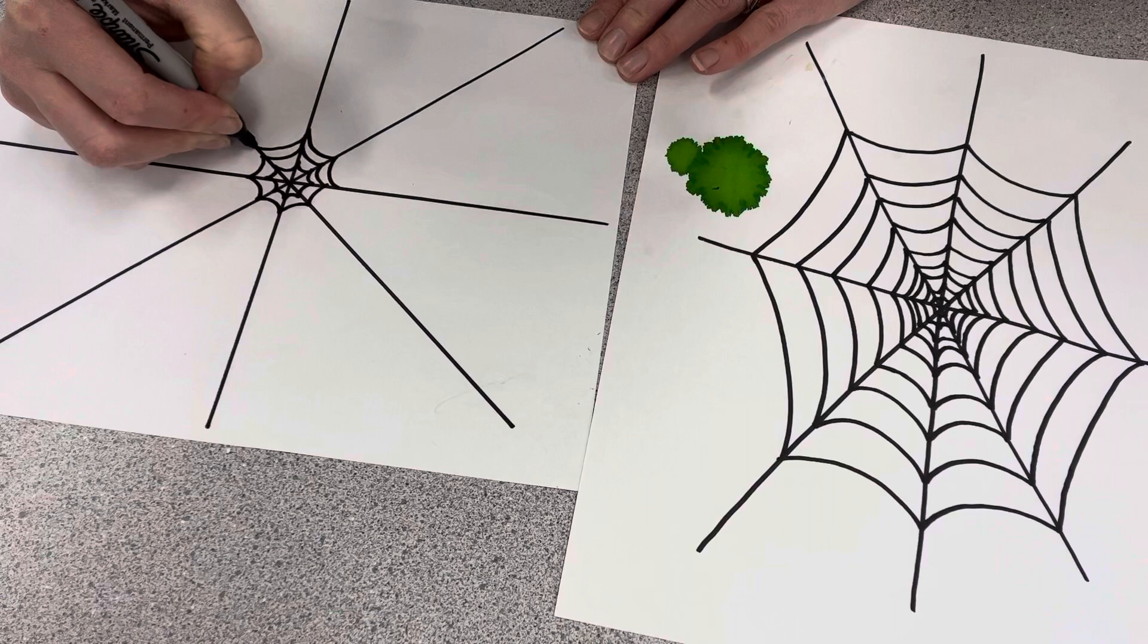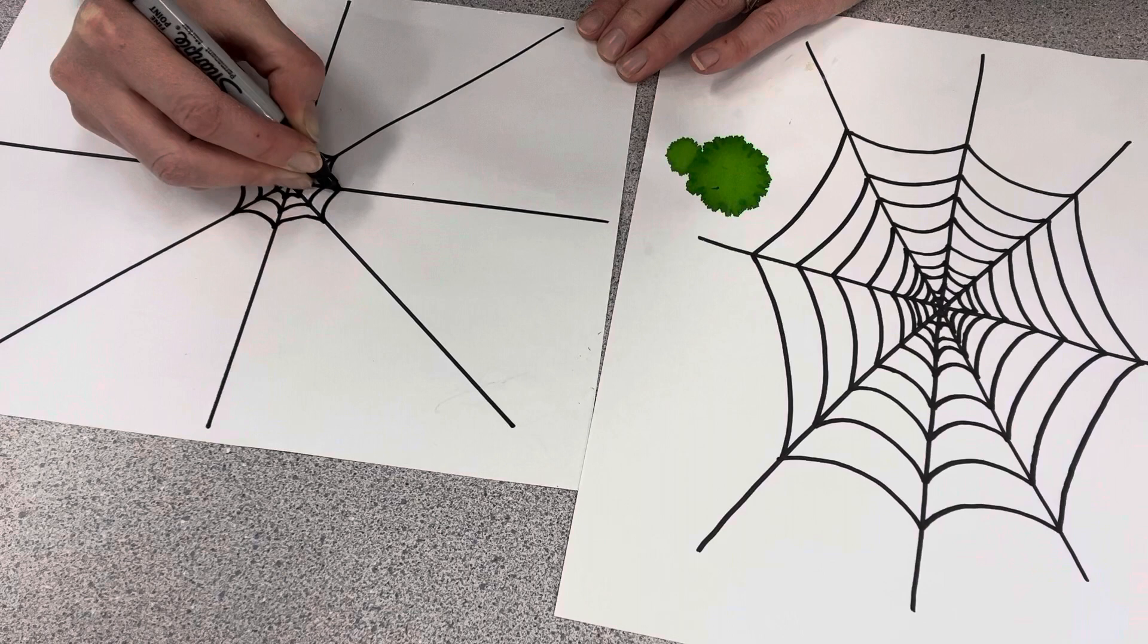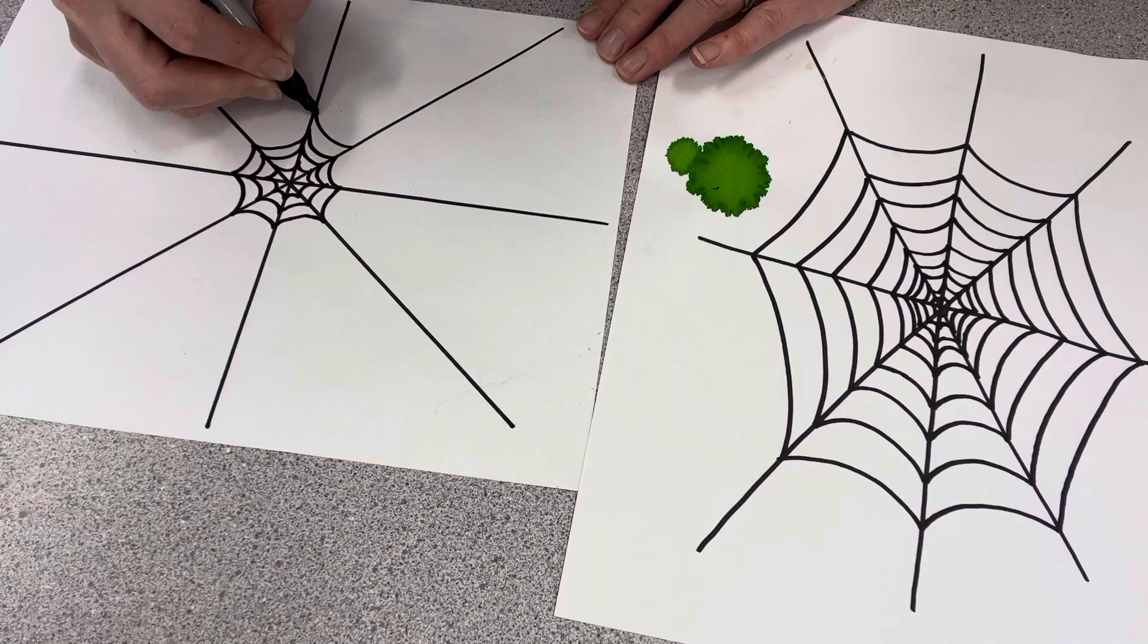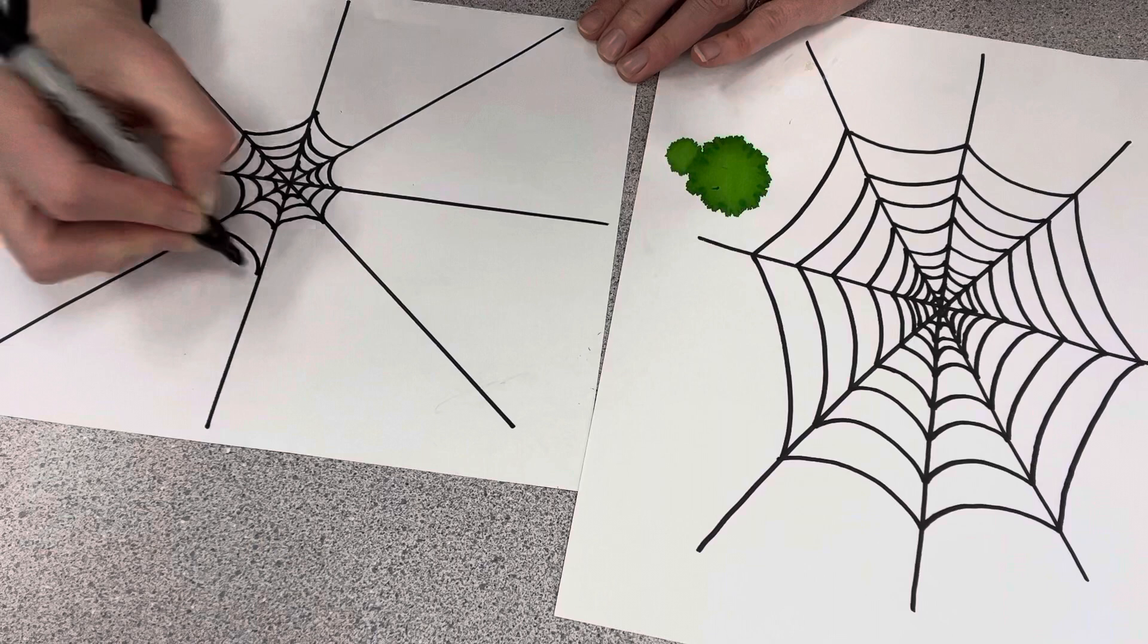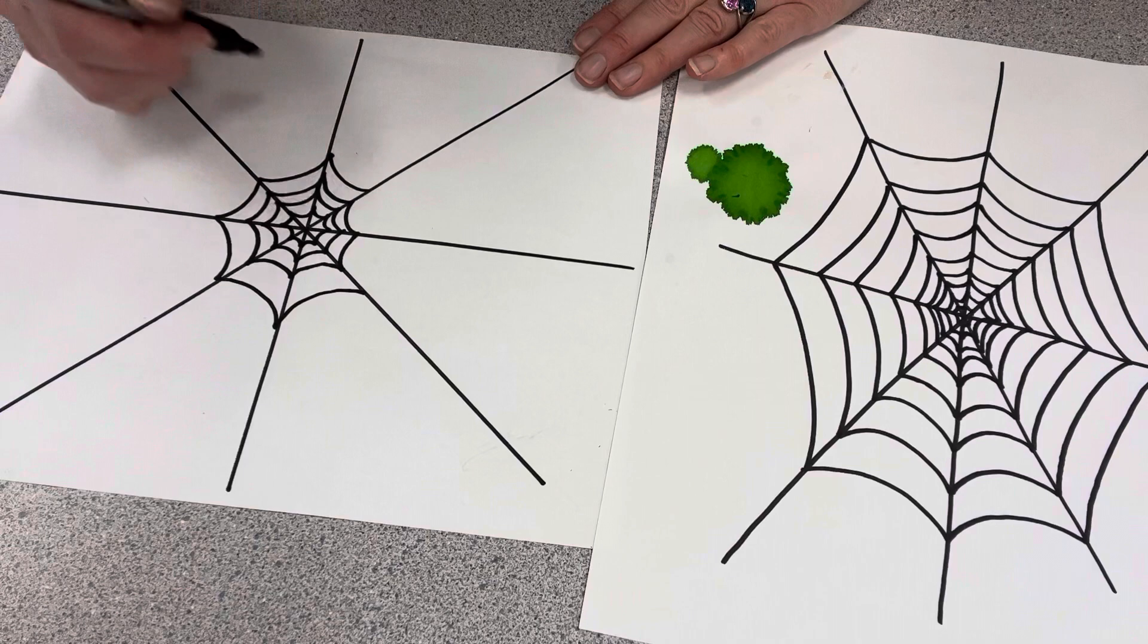So, you kind of get the idea. You're going around and around and around, and you're bending the line. Now, I've also seen people do a reverse bend. So, instead of like that, they do it like this.